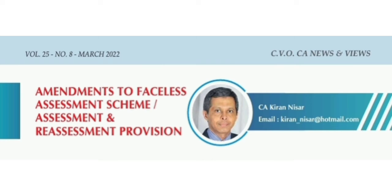Amendments Proposed for Sections 148 and 148A of the Act. Under the existing provisions, as per the proviso to Section 148, a notice for reassessment u/s 148 can be issued only when the assessing officer is in possession of some information which suggests that income chargeable to tax has escaped assessment and a prior approval from the specified authority is obtained. Section 148A provides: (a) how to conduct enquiry if required, with prior approval; (b) opportunity of being heard to be given to the assessee, with prior approval; (c) how to consider the reply of the assessee; and (d) order to be passed as to whether it is a fit case for issue of notice u/s 148.